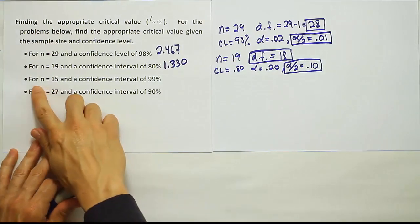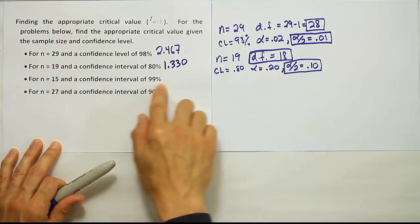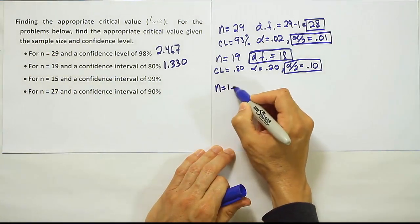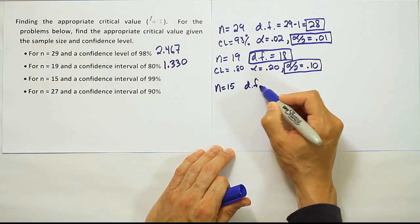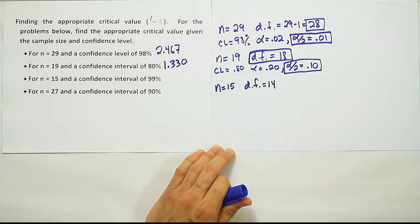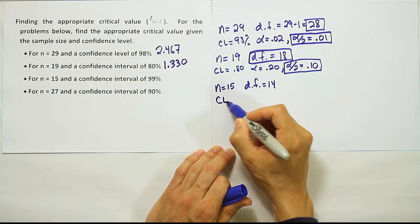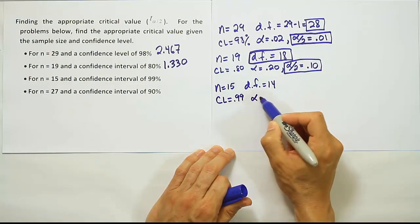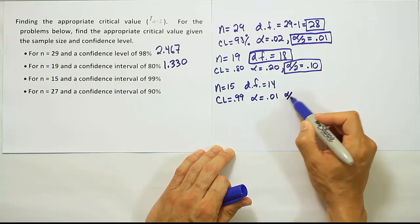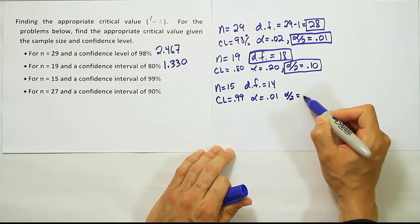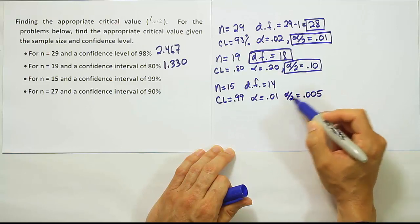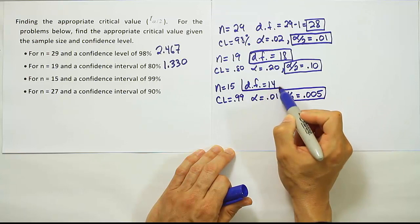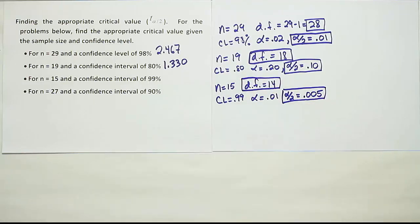For n equals 15 and a confidence level of 99%, the degrees of freedom will be 14 — one less than n. The confidence level of 99% means alpha is 0.01, and alpha divided by two is half of that, at 0.005. We'll look up that alpha divided by two value and 14 degrees of freedom to find our critical T value.